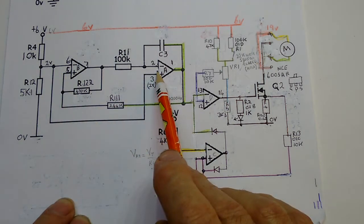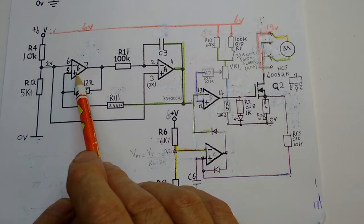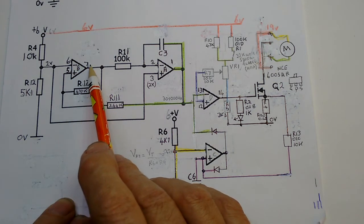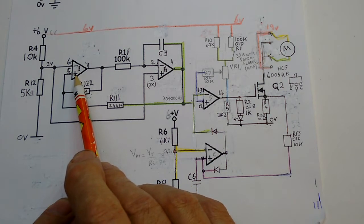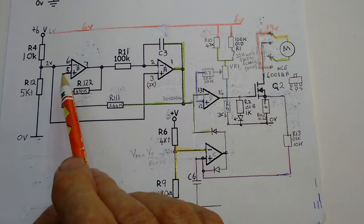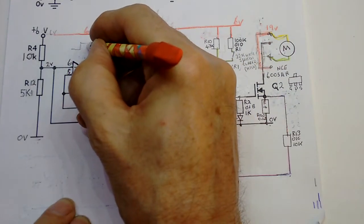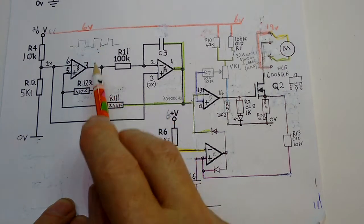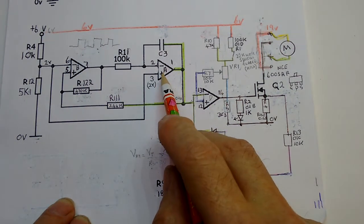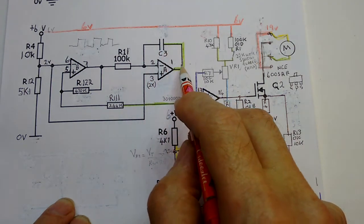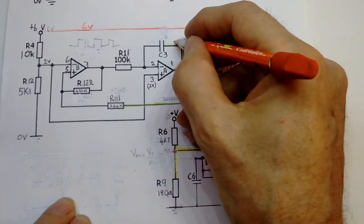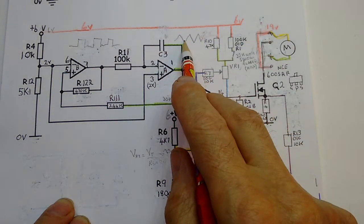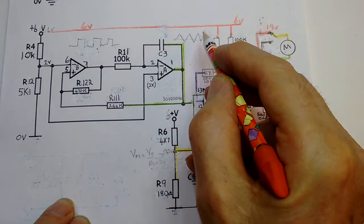So we've got two volts into both inputs. Now if this input is greater than that input, then the output goes positive. If this input is greater than that input, the output will go negative. And wired as it is there, what it will do is produce a square wave on the output. We then put it into this operational amplifier which, because it's got a capacitor on the feedback, is going to change that square wave into a triangular wave.